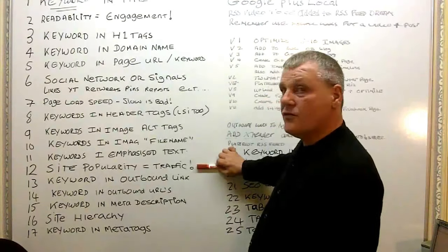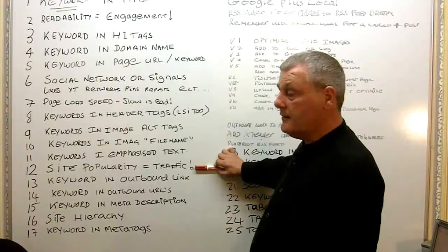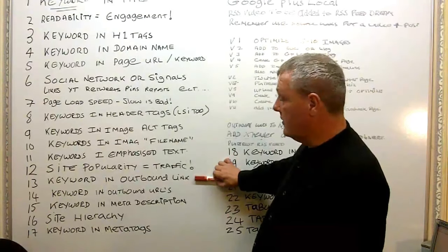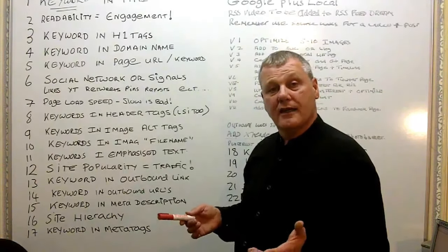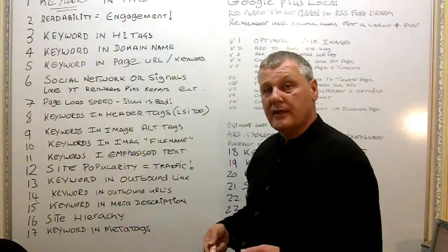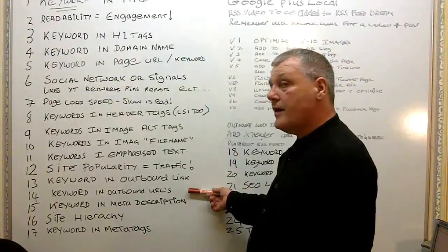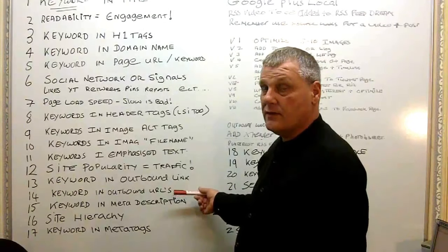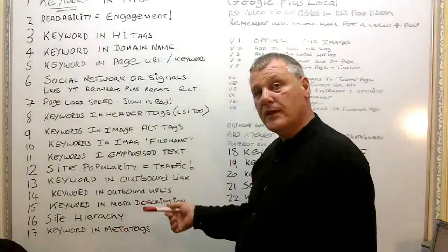Site popularity equals traffic — look at the Alexa ranking, lower is better. Keyword in outbound links is obviously very important too. I always tell you to use high PageRank sites such as Wikipedia or governing bodies of the industry you're working in. Keyword in outbound URLs as well — if it was a tree surgeon and you went to Wikipedia with it, that's a keyword in an outbound URL.